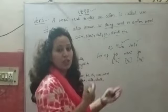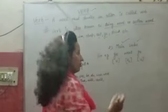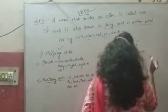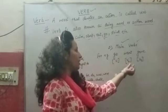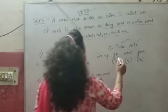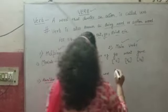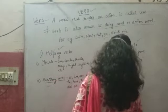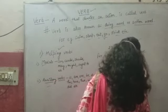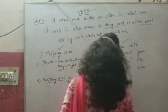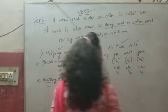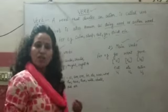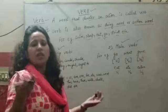For example: go, went, gone. These are the three forms — go is the first form, went is the second form, and gone is the third form. There are many verbs, many actions and many activities — these are all according verbs.